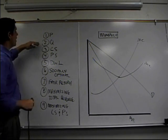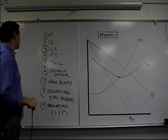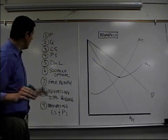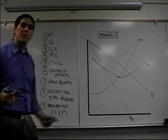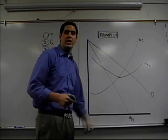We need price and quantity, consumer surplus, producer surplus, deadweight loss, socially optimal quantity, fair return, maximizing total revenue, and maximizing consumer and producer surplus.